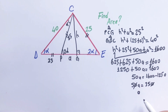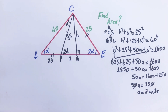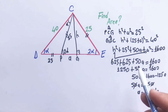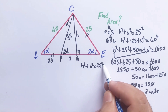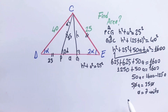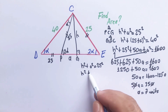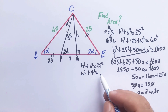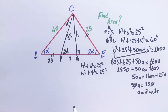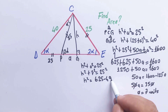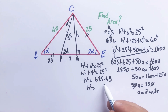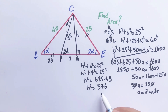a is going to be 7 units. Now we can calculate the height easily. Writing h squared plus 7 squared equals 25 squared, so h squared equals 625 minus 49, and h is going to be 24 units.